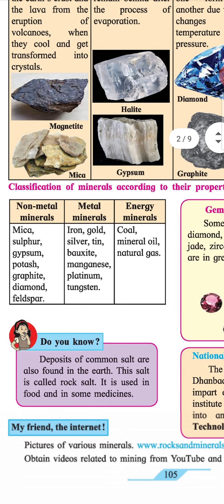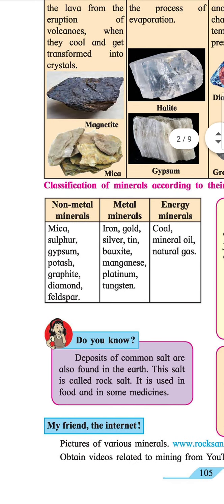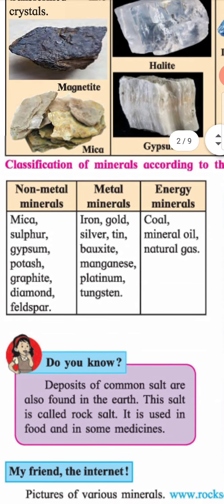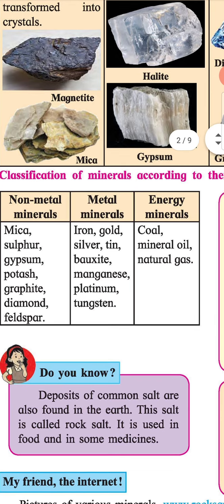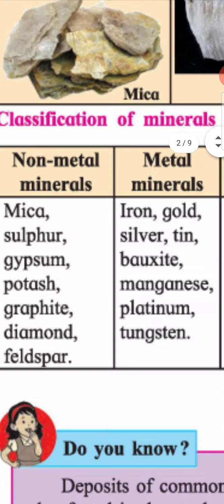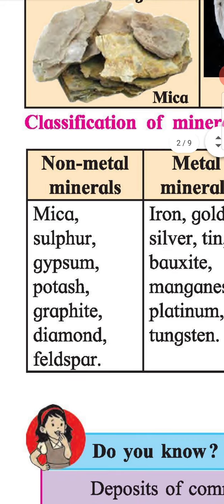Classification of minerals according to their properties: Under non-metal minerals we have mica, sulfur, gypsum, potash, graphite, diamond, and feldspar.